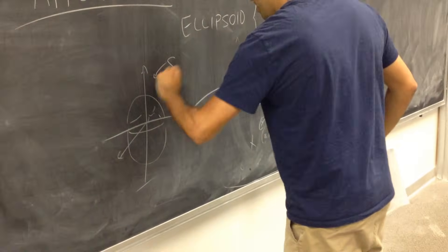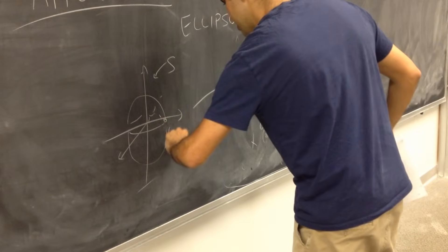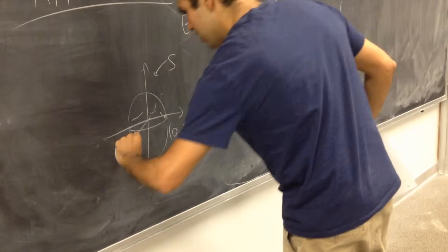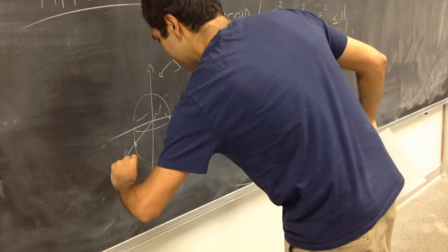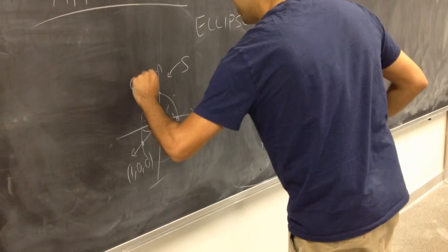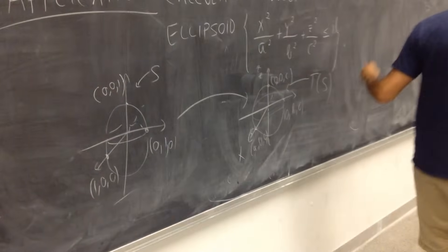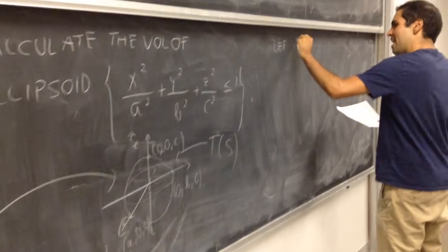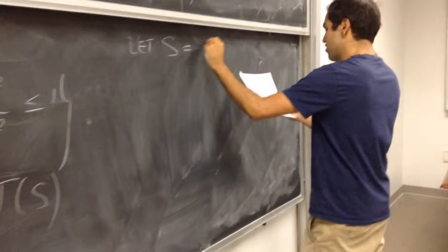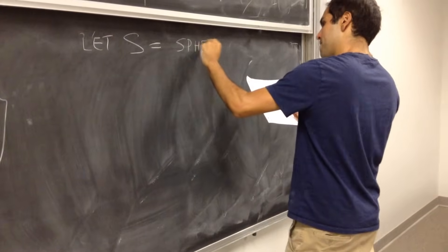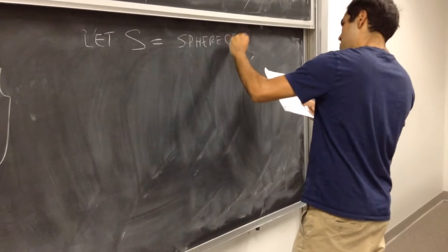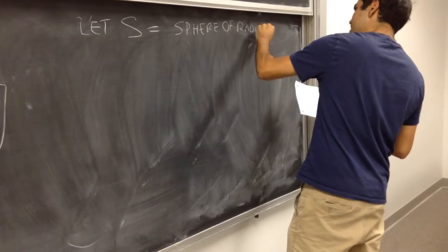S, and this is the point 0, 1, 0, 1, 0, 0, 0, 0, 1. So, the standard sphere, so that S equals to sphere of radius 1, radius 1.